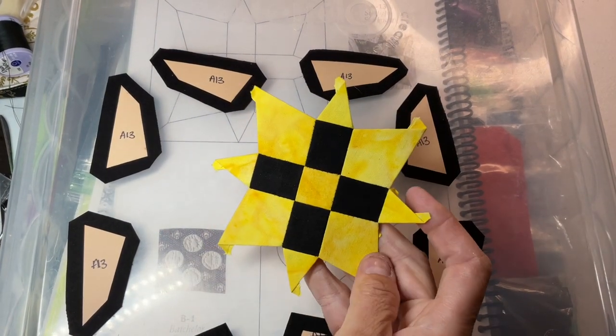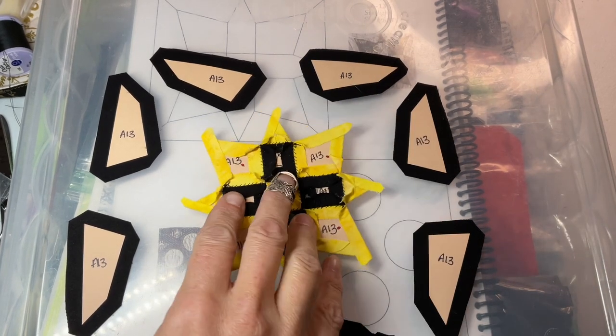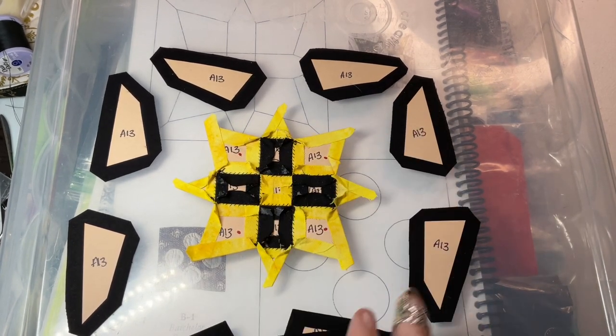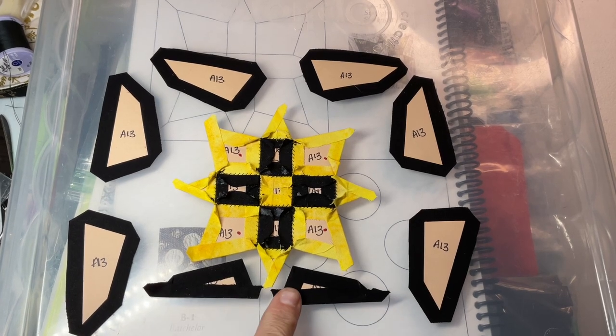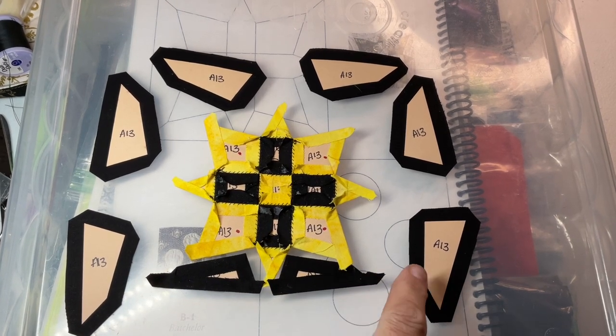So I've assembled the center star completely at this point. And now I'm going to baste. I've started to baste these two and then we'll attach these as we go around.